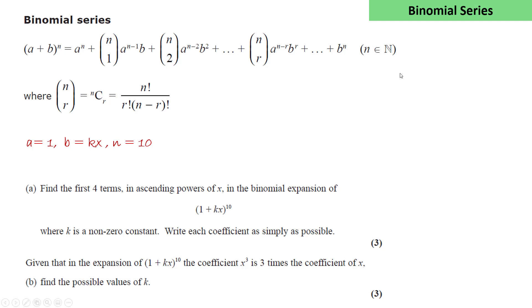So here A is 1, B is kx, n is 10. We substitute those directly into the formula. As A is 1, all of the powers of A become 1. I'd recommend your first effort simply replaces the expressions directly into the formula.